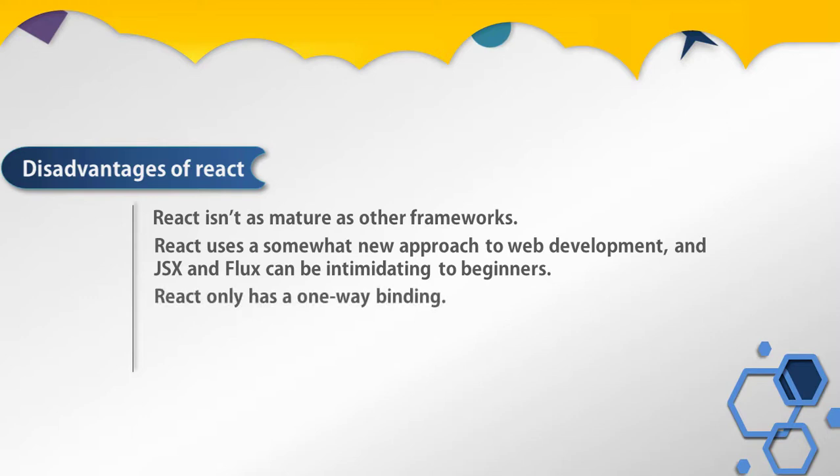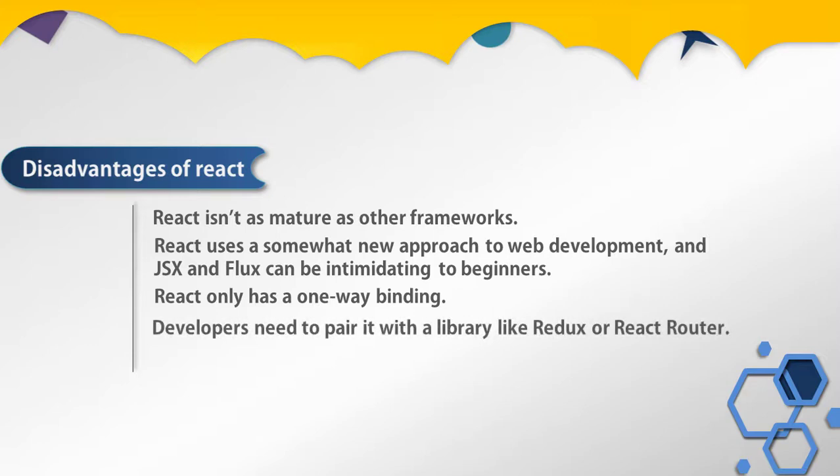The third disadvantage of React is that React only has one-way binding. Although one-way binding is better for complex apps and removes a lot of complexity, some developers who are used to two-way binding will find themselves writing a bit more code. The fourth disadvantage is that developers need to pair React with a library like Redux and React Router to achieve functionality comparable to Angular and Ember. This can also be advantageous if you need a minimalistic UI library to integrate with your existing stack.